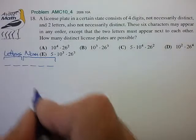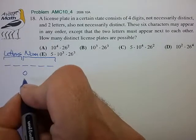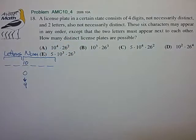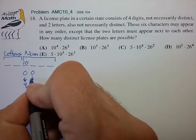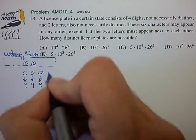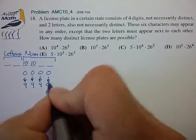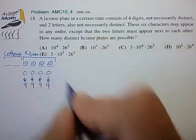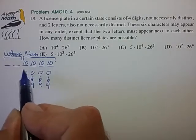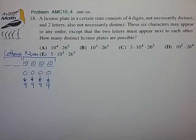For the first digit of the number, we can choose between digits zero through nine for ten possible choices in that first digit. Likewise zero through nine for ten possible choices in the second digit, and likewise for the third and the fourth digit. For license plate numbers we allow a leading zero digit, unlike for a counting number where we usually exclude a zero as a leading digit.